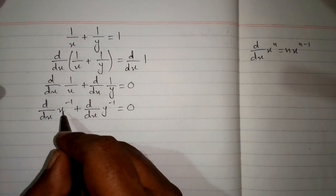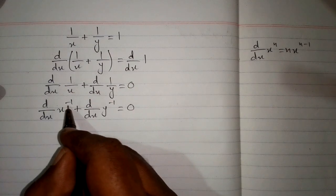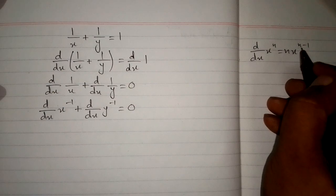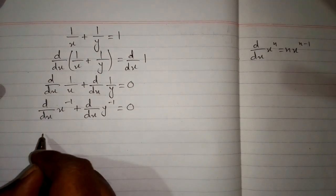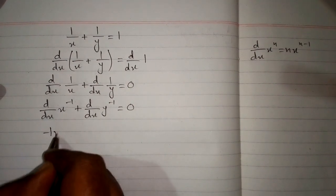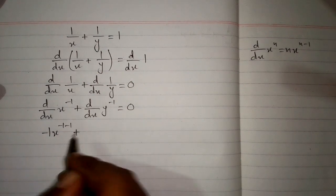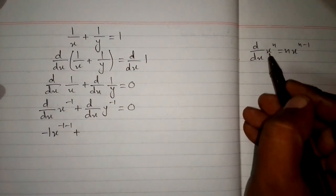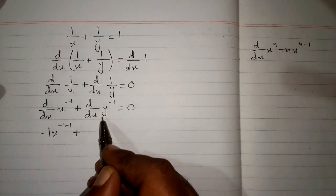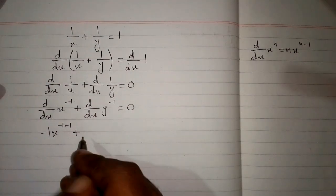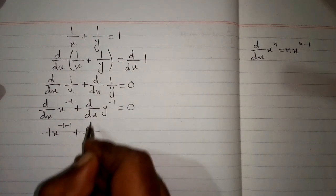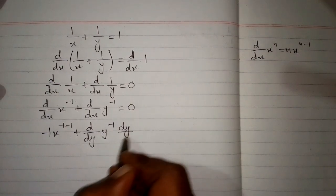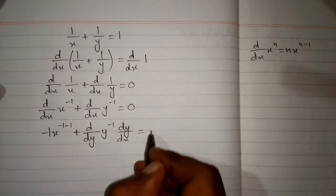We can apply this formula here, and we can see that we have minus 1 in place of n. So we will put minus 1 here. However, we cannot apply the power rule directly to the y term, because the variable of differentiation and the variable in the expression must be the same. Here we have different variables, so we will apply the chain rule — replacing dx by dy and then multiplying by dy/dx.